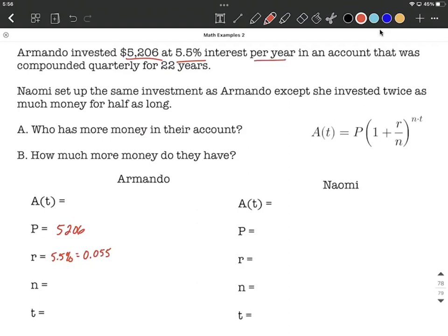It was compounded quarterly - that's important. That's how many times it gets compounded and interest added to the account each year, so n is going to be 4, for 22 years. That's the time frame that's going to go in for t.